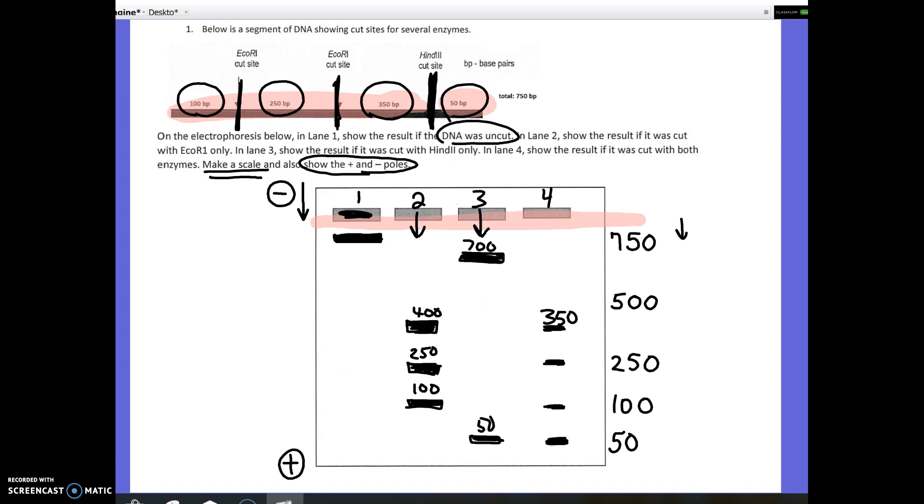Now, one way you can double check yourself, since our original DNA was 750 base pairs long, no matter how many pieces I cut it into, my bands should all add up to 750. So, one band at 750, that's 750. Three bands, 400 plus 250 plus 100, adds up to 750. 700 plus 50 adds up to 750, and 350 plus 250 plus 100 plus 50 adds up to 750, because we haven't lost any DNA. It's just a matter of whether we have one piece, two pieces, five pieces, however many pieces we have, it should all total up to the original length. So, that is how you would do an electrophoresis, and that's going to be worth six out of the 15 points of the short answer.